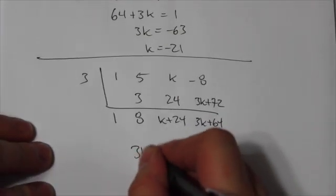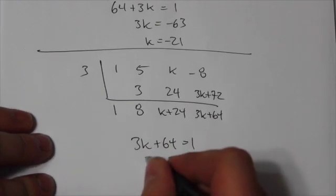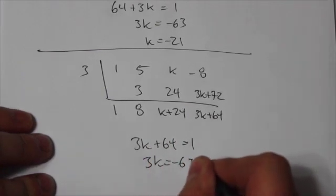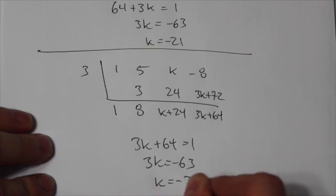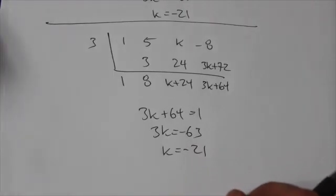So this is going to be 3k plus 64 is equal to 1. 3k equals negative 63. k is equal to negative 21. And there's that negative 21 that I was looking at before.